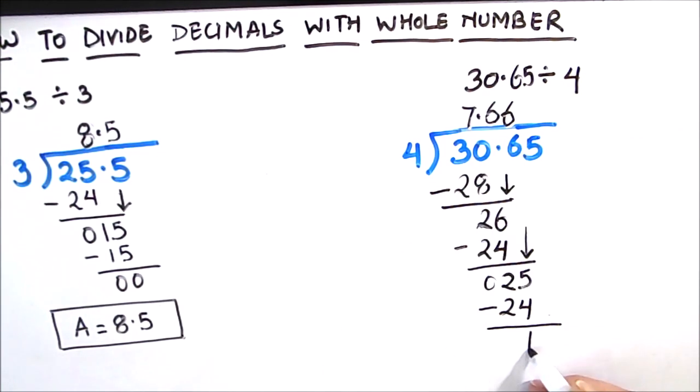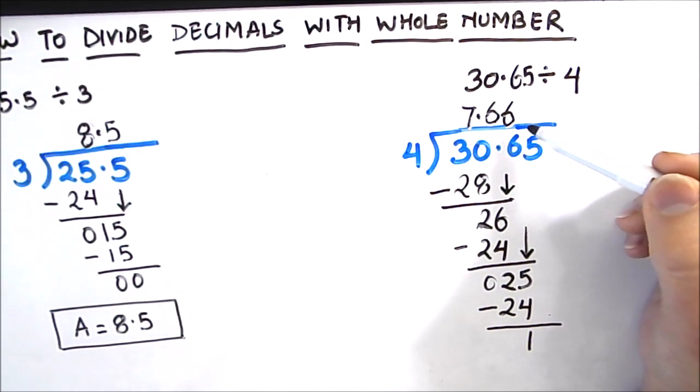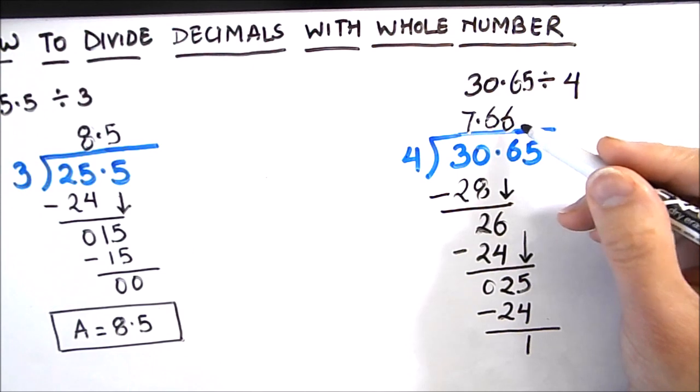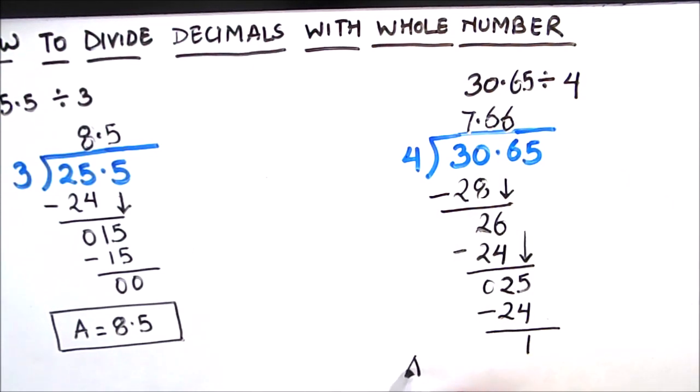And our remainder is 1. So as we got the answer up to 2 decimal places we can stop here. So our answer is 7.66. This is how we divide decimal numbers with whole numbers. I hope this video is helpful to you. If you like the video please hit the like button and do subscribe to Reno math for more math videos.